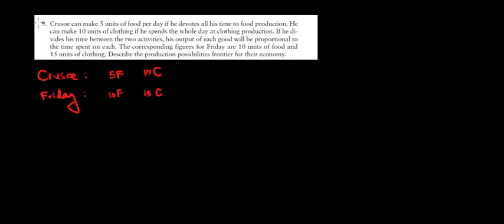Let's have a look at question 9. Cruso can make 5 units of food per day if he spends all his time on that, or 10 units of clothing if he spends all his time on that. If he divides time between the two activities, output is proportional to time spent on each. The corresponding figures for Friday are 10 units of food and 15 units of clothing.